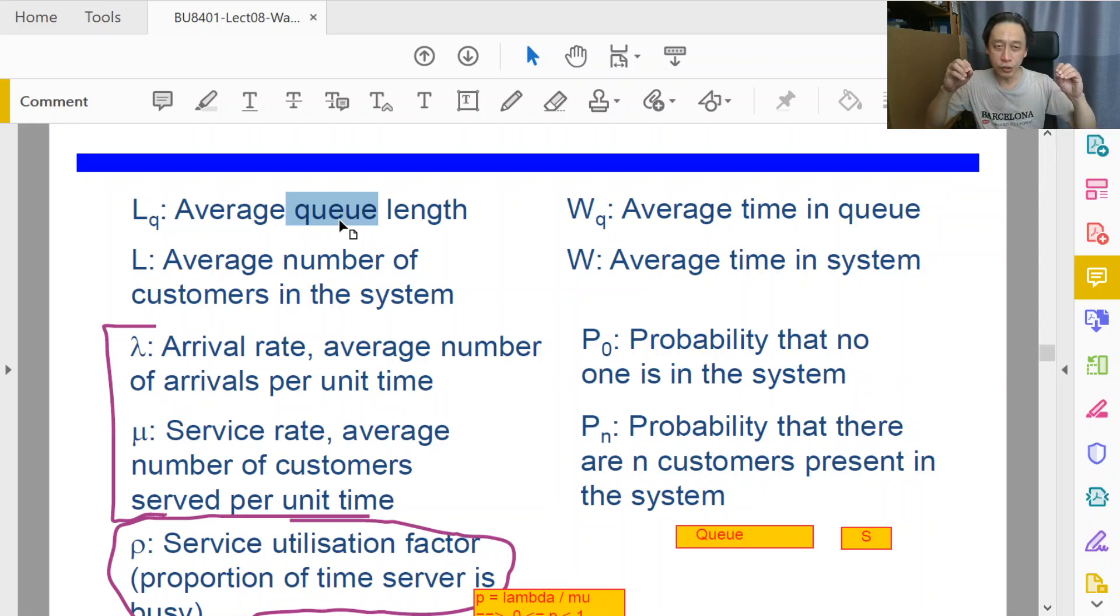If the average queue length is large, does it imply that the average queue time is also long? Long queue means long waiting time, is that true? Think about it from your past experience. Long queue means long waiting time until you get served, and conversely short queue means short waiting time in the queue.